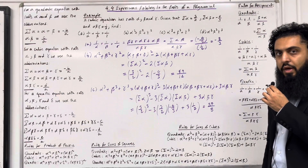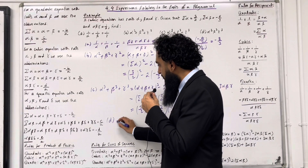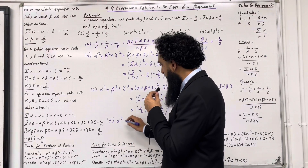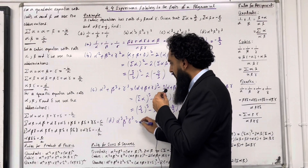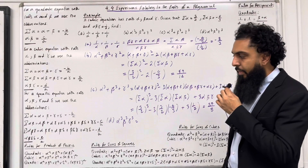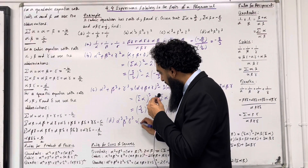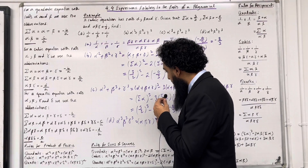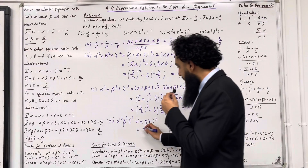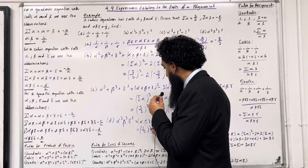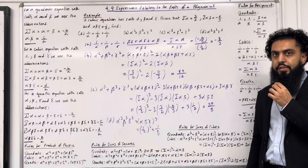Moving on to part D — we have alpha cubed multiplied by beta cubed multiplied by gamma cubed. Using rules for product of powers, we can rewrite this as (alpha beta gamma) cubed. So this is equal to (1 over 2) cubed, which is equal to 1 over 8. This completes the example.